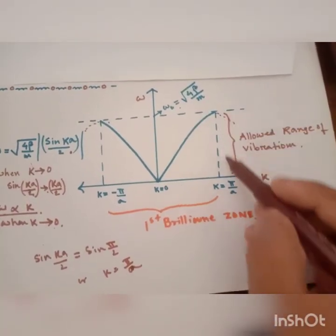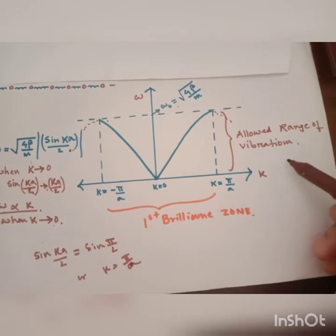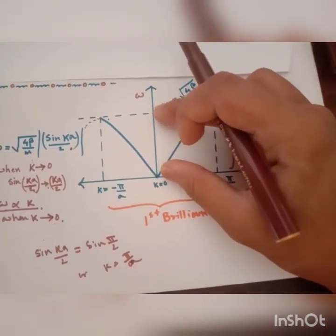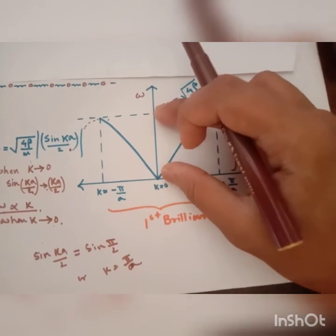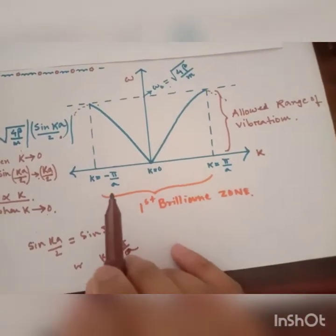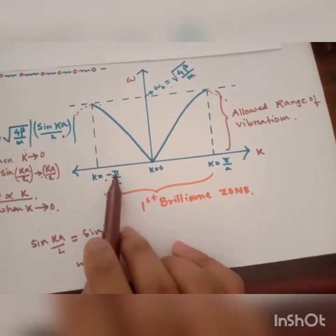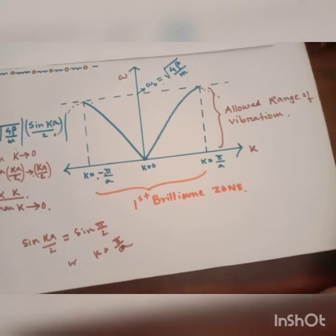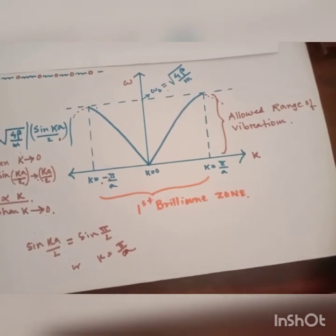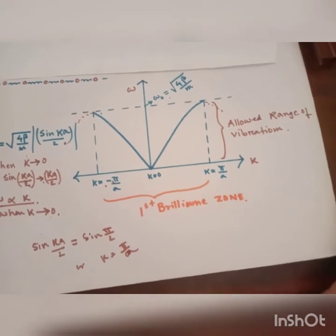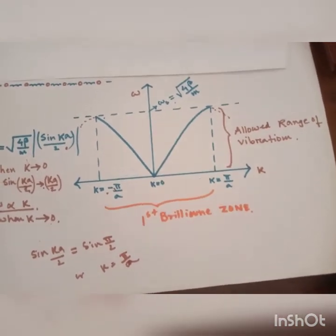This part of vibration is allowed only in case of monatomic lattice vibration, and the range between minus π/a to π/a is called the first Brillouin zone. Likewise we have a second Brillouin zone, third Brillouin zone, etc.